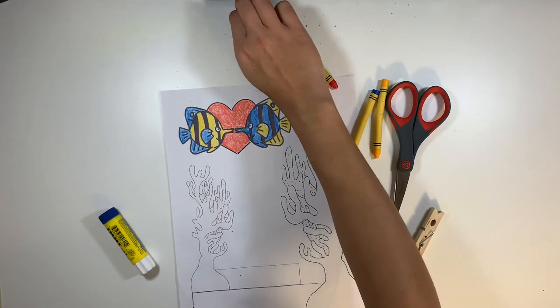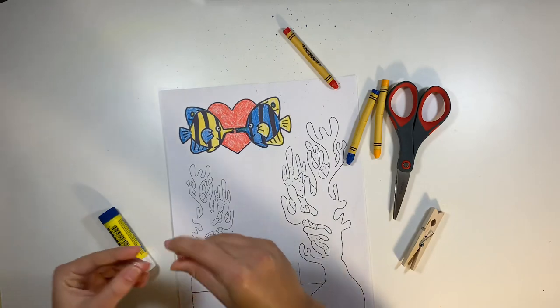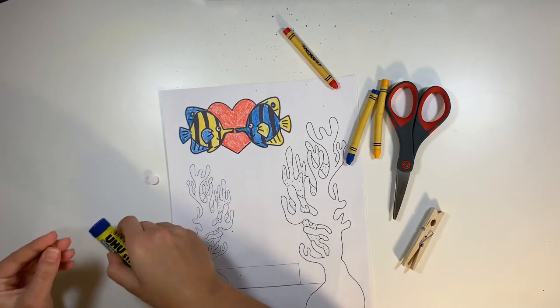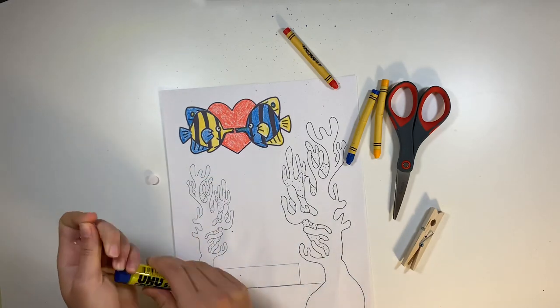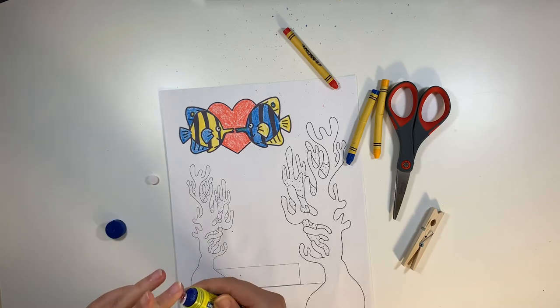Once you're all finished coloring, you can add your googly eyes with some glue. You can either add them on now, or you can wait until after you've cut everything out, which might be a little easier for later.